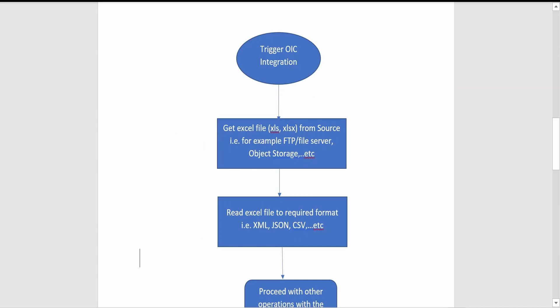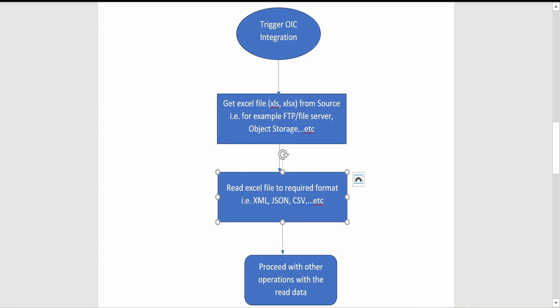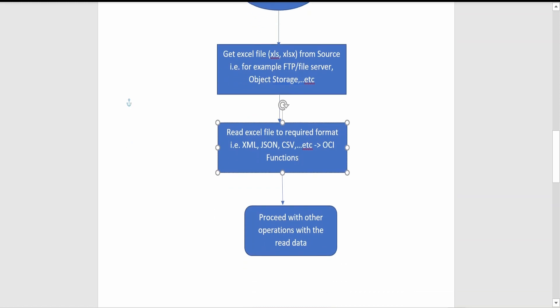Coming to the approach, we have to create an integration — either a scheduled integration or one invoked by an HTTP request. Once the OIC integration gets triggered, the first job is to get the Excel file. The Excel file can be pulled from an FTP server, SFTP server, object storage, or even from the request at the time of invocation. Step two is to read the Excel file and convert it to the required format — XML, JSON, or CSV. For this conversion, we are making use of an OCI function. Once the data has been converted, we proceed with other operations.